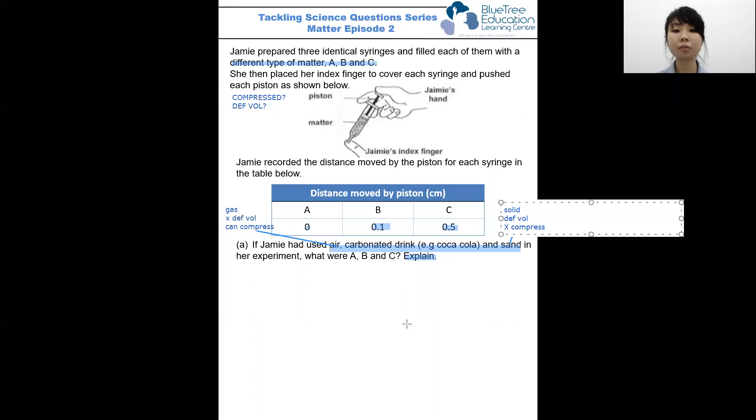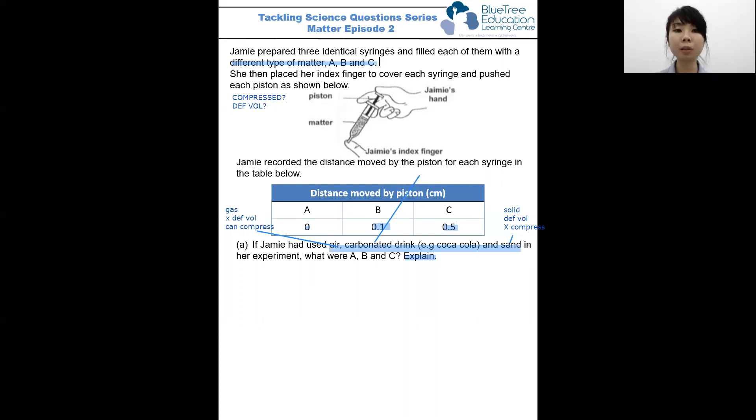Finally, for the carbonated drink, this is slightly tricky, because carbonated drinks like Coca-Cola, like Sprite, they are liquids, but they also contain a small amount of air bubbles within. So the liquid on its own has a definite volume, cannot be compressed, but the fact that there are air bubbles within the liquid allows for some amount of compression, because air can be compressed.